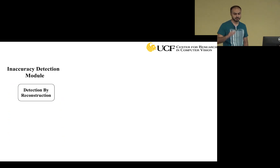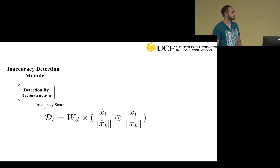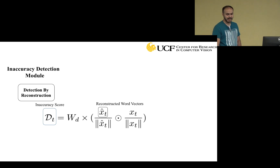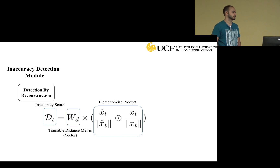For detection by reconstruction, to get the inaccuracy score of word t in the sentence, we need the reconstructed word vector x-hat-t of that word and the actual word vector x-t. We compute the distance between these two vectors by normalizing each of them, applying an element-wise product, and a trainable distance metric, which gives us a scalar as the inaccuracy score for word t.